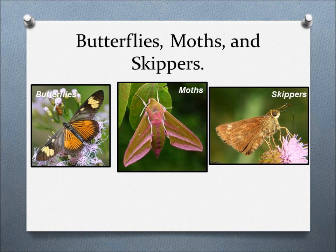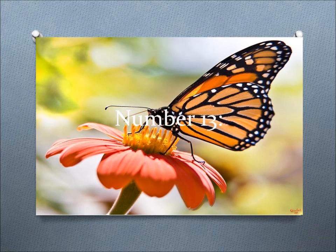These insects spend most of their life as caterpillars feeding on living plant tissues, while the adults usually feed on nectar, but some adults do not feed at all.